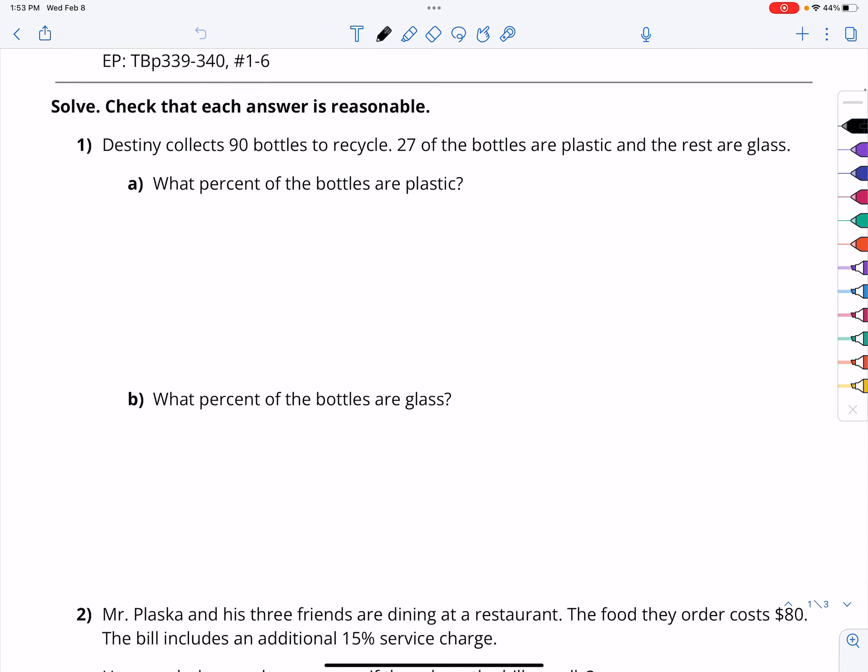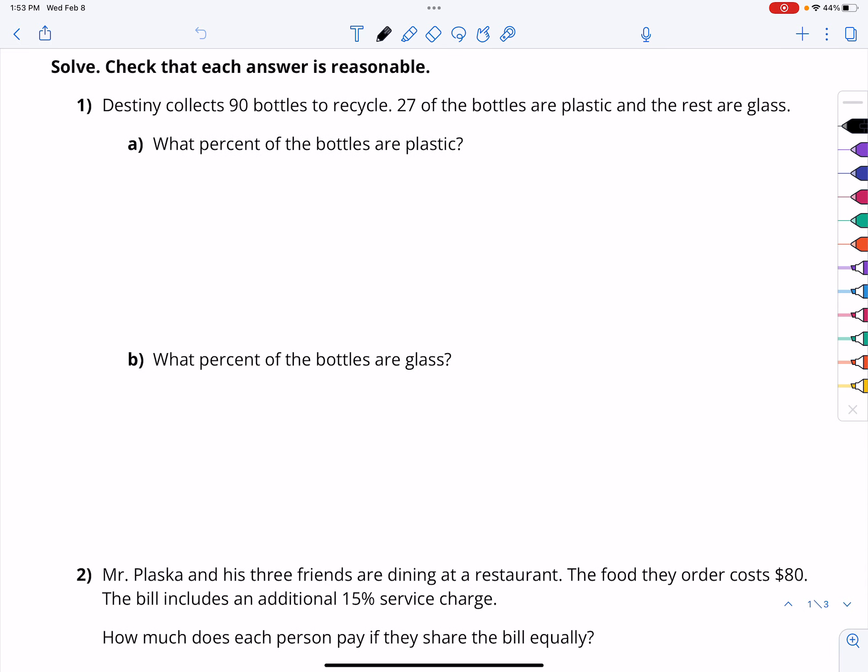As we go through this, I am going to be modeling how to pick a good strategy, how to do a quick model, so that way I know the math that I am doing is the correct math. So, Destiny collects 90 bottles to recycle. 27 of the bottles are plastic, and the rest are glass. Here's her total amount, we know that she's collected 90 total, or 100% is 90. And then 27 of them are plastic, the rest are glass.